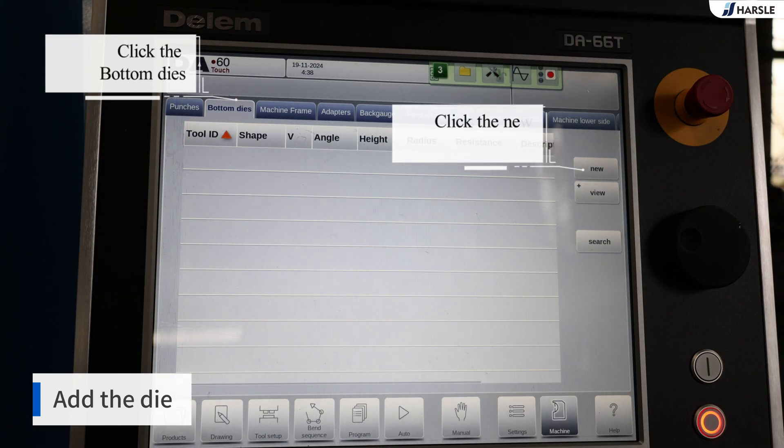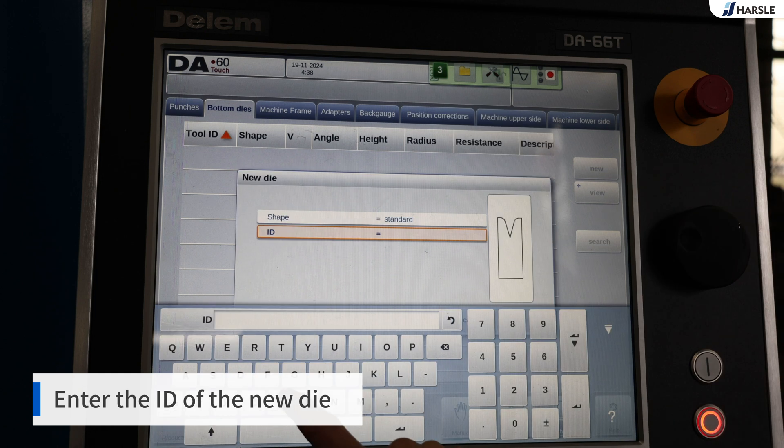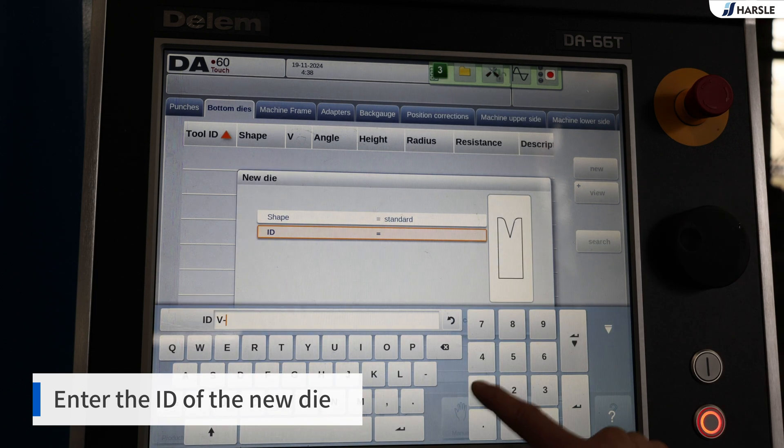Add the die. Click the bottom dies. Click the new. Enter the ID of the new die.